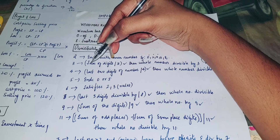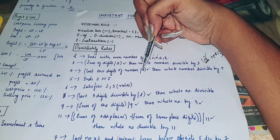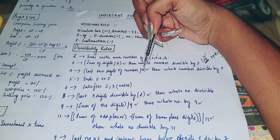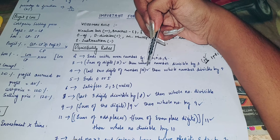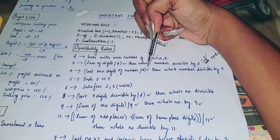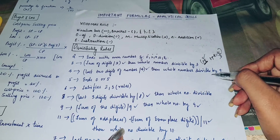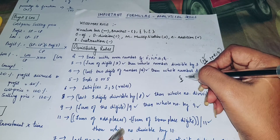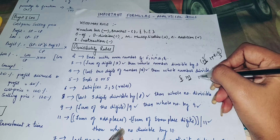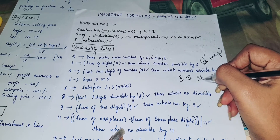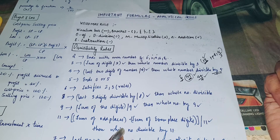Next, divisibility rule of 4: the last two digits of the number must be divisible by 4, and then the whole number is divisible by 4. For example, we have 144. The last two digits are 44. 44 is divisible by 4, so the whole number is divisible by 4.